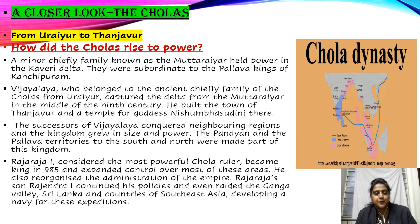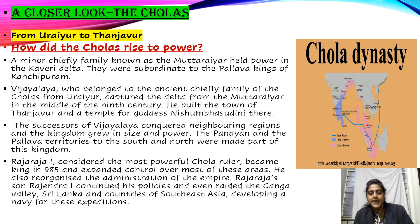Raja Raja I, considered the most powerful Chola ruler, became king in 985 CE and expanded control over most of these areas. He also reorganized the administration of the empire. Raja Raja's son, Rajendra I, continued his father's policies and made changes in the administration.